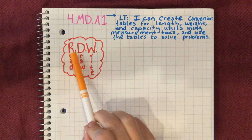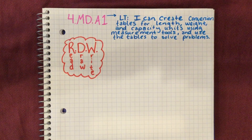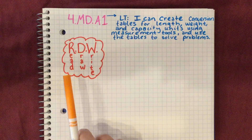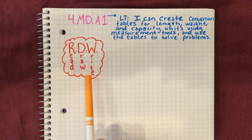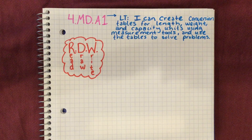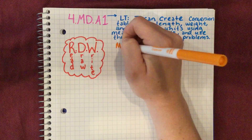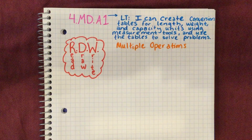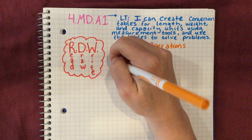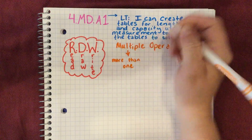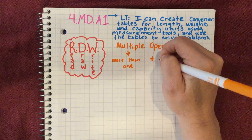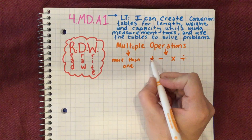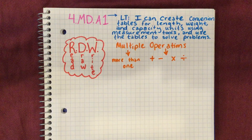We are going to be practicing the RDW strategy. RDW will come up in the Zearn lessons this week and it stands for Read, Draw, Write. So you're going to read the problem, draw a picture to go with the problem, and then write your response. Something really important to note is that there will be multiple operations when solving problems like this. Multiple operations means more than one — we add, subtract, multiply, or divide. A lot of these problems will ask us to use more than one of these skills in order to solve.